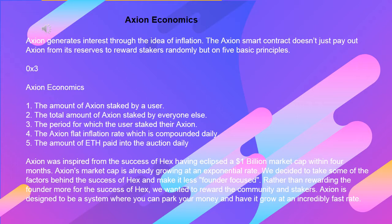Axion Economics: 1. The amount of Axion staked by a user. 2. The total amount of Axion staked by everyone else. 3. The period for which the user staked their Axion. 4. The Axion flat inflation rate, which is compounded daily. 5. The amount of ETH paid into the auction daily.